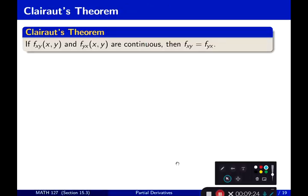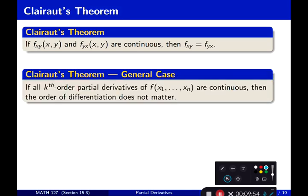Clairaut's Theorem: If f_xy(x, y) and f_yx(x, y) are both continuous, then f_xy equals f_yx. So if the function is nice enough that the mixed partials — taken either way — are continuous, then the mixed second-order partials are equal. The general case of Clairaut's Theorem: if all kth-order partial derivatives of f(x1, ..., xn) are continuous, then the order of differentiation does not matter.